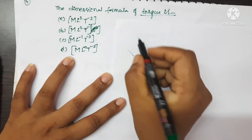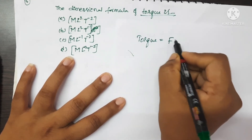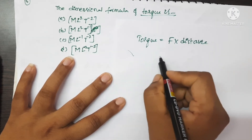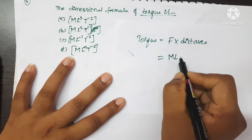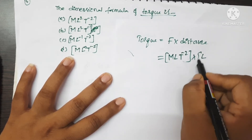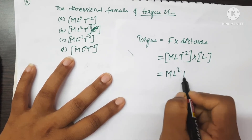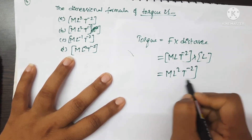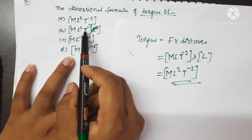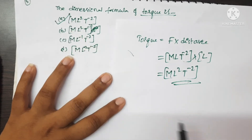The formula for torque is force multiplied by distance, which equals dimensions of force MLT⁻² multiplied by distance L. So this is equal to ML²T⁻². This is the dimensional formula for torque. A is the correct option.